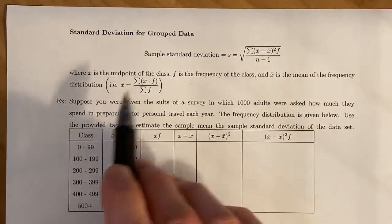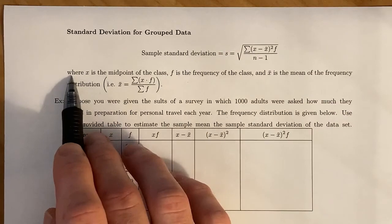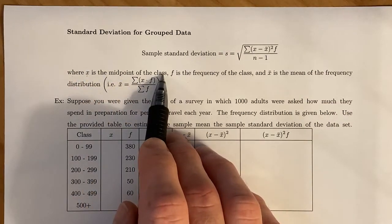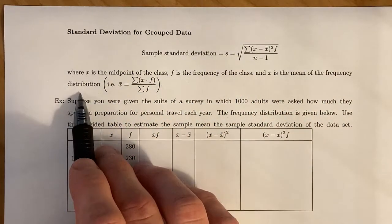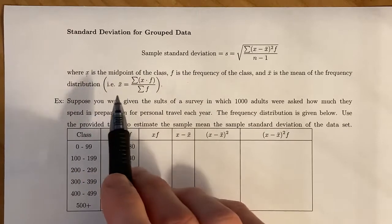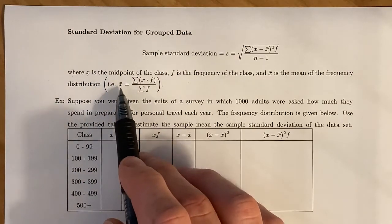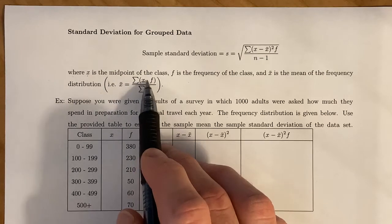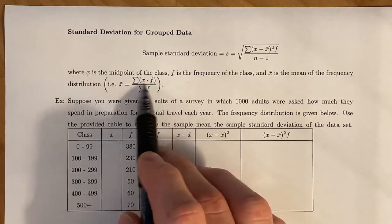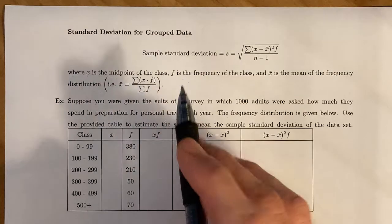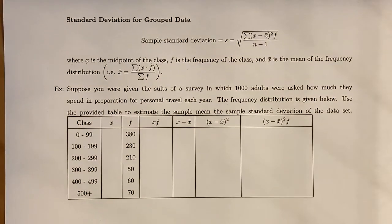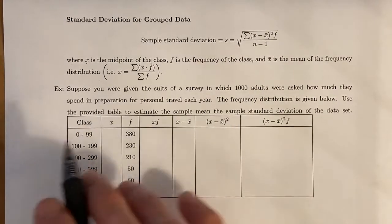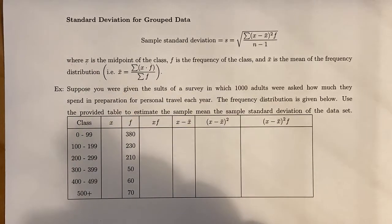X is the midpoint of our class, F is the frequency of the class, and X-bar is the mean of the frequency distribution. To recall that, X-bar equals the sum of the midpoint times the frequency for each class, divided by the sum of the frequencies. That tells you how many data points you have total, but it doesn't tell you where each data point lives.